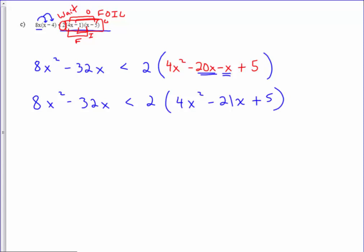From here, I'll distribute the 2 on the right. I'll keep the left side just as it is. Multiplying through the 2, I'll have 8x squared minus 42x plus 10.